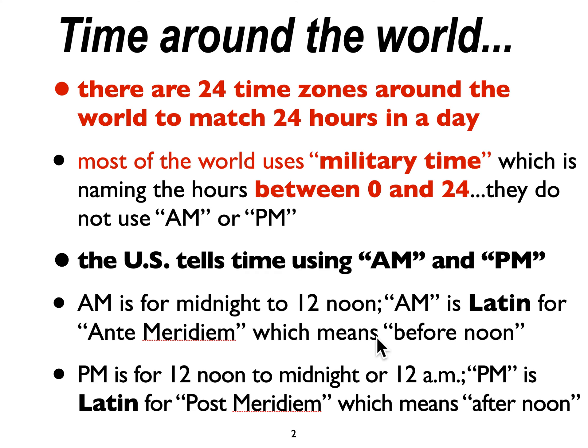So again, that's something to be aware of when you travel around the world. If somebody says it's 23 o'clock in their country, for us that would be 11 p.m., one hour before midnight. But around the world they would say 23 o'clock. So midnight to 12 a.m. for us is 0 to 12 for everyone else around the world. But then 12 noon to 12 p.m. for us would be 13 o'clock to 24 o'clock. That's military time.